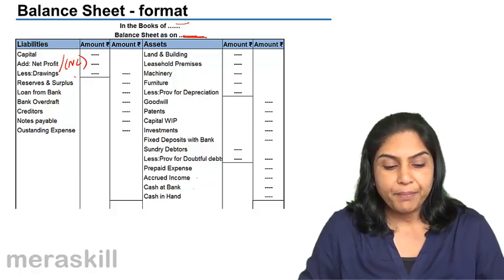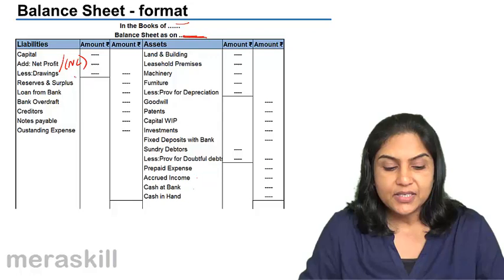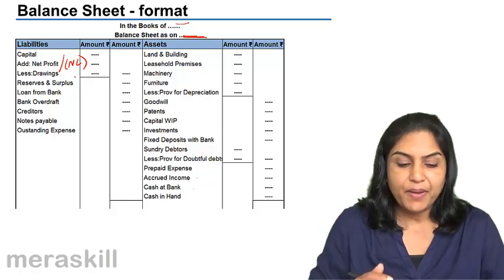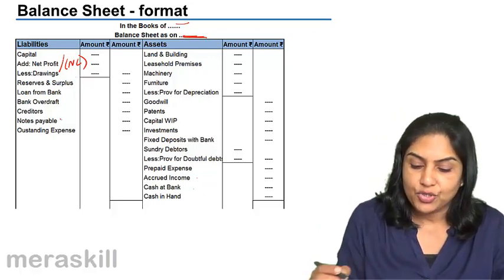Loan from bank, bank overdraft, creditors, notes payable or bills payable, outstanding expenses. Bills payable would come here like notes payable.